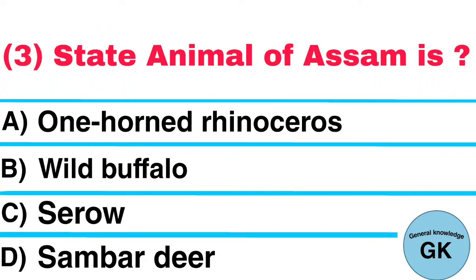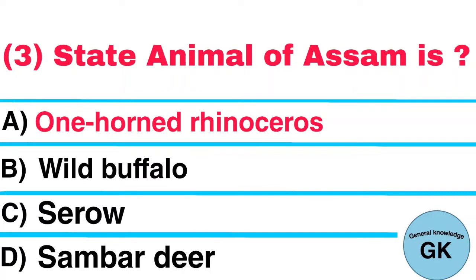Question Number 3. State Animal of Assam is: A. One Horned Rhinoceros, B. Wild Buffalo, C. Zero Deet Samhar, D. (option). Answer: One Horned Rhinoceros.